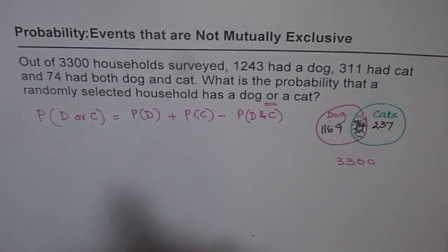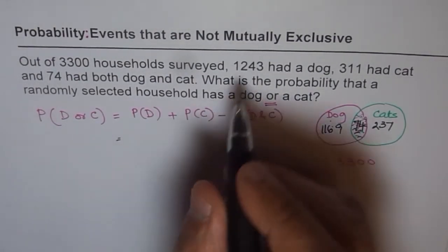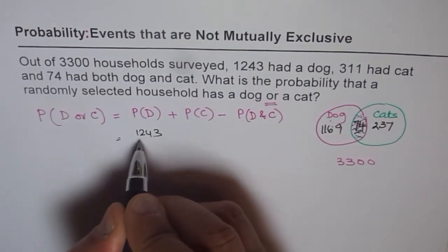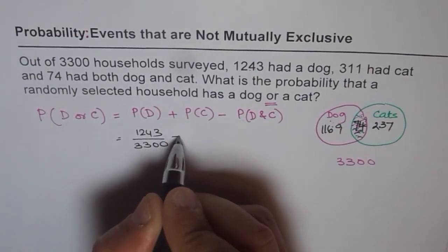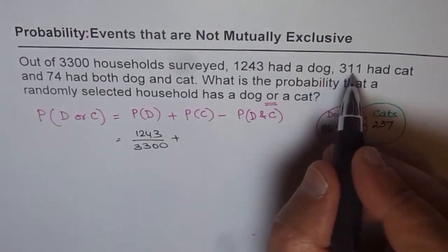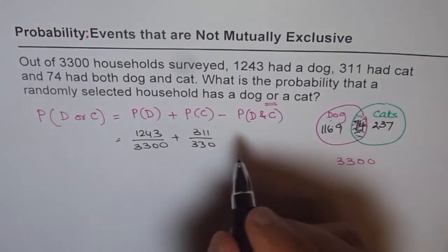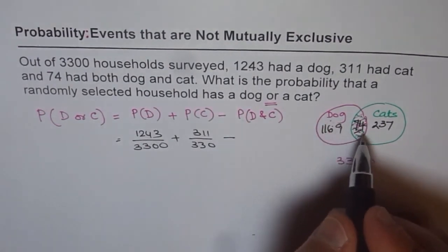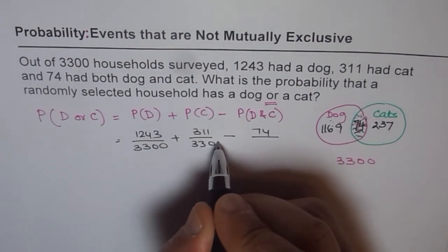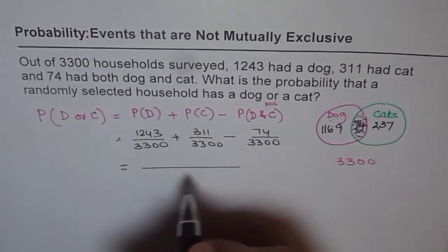So in this case, what is the probability of a household to have a dog? The probability is 1243 divided by 3300. And what is the probability of a household having a cat? It is 311 divided by 3300. And we have to take away probability of having both. That is 74 over 3300.